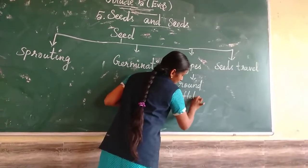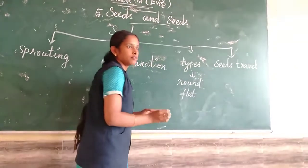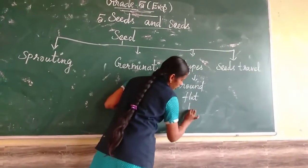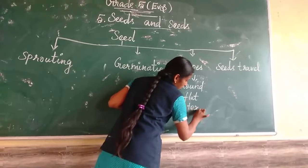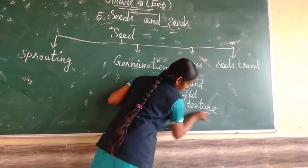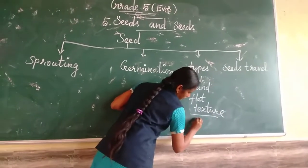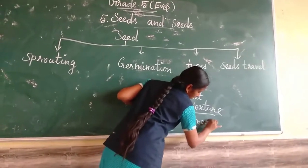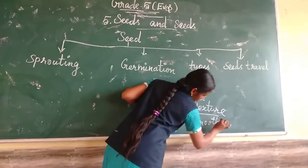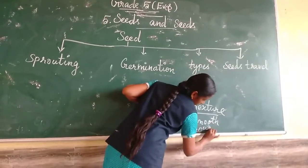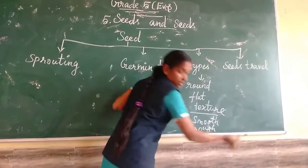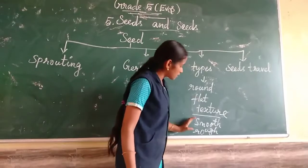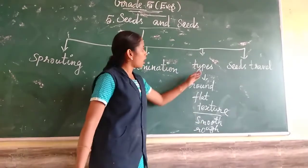We can have a round seed and a flat seed. Then for the texture of the seed: smooth and at the same time rough. We have seeds like that. What is the texture of the seed? Smooth and rough.